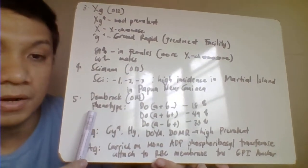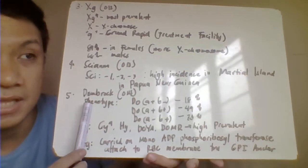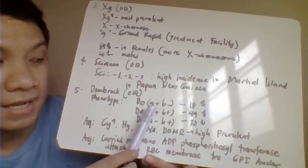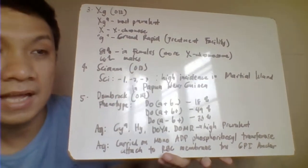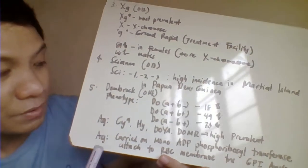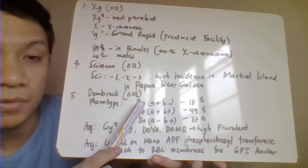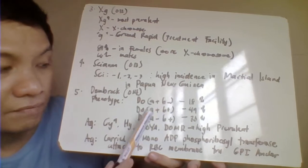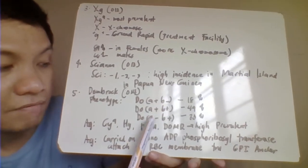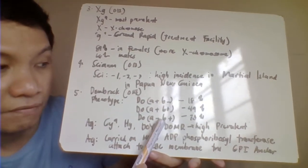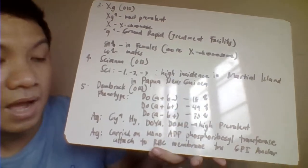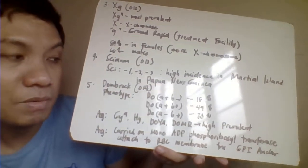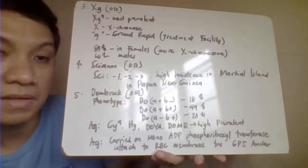Then we have the Dombrock blood group system. This includes your DO A and DO B. We have the phenotype DO null Dombrock A positive B negative, Dombrock A positive B positive, and Dombrock A negative B positive. Among the phenotypes here, the highest prevalence would be the phenotype Dombrock A positive B positive.